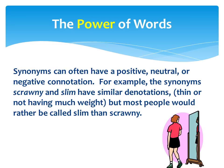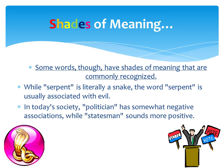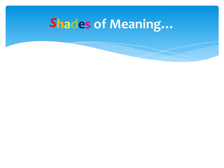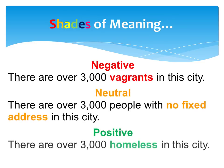Let's examine another example. Connotations can add shades of meaning and may affect how a reader approaches a subject. While serpent is literally a snake, the word serpent is usually associated with evil. In today's society, politician has somewhat negative associations, while statesman sounds more positive. All three expressions refer to the same people, but they trigger different associations in a reader's mind.